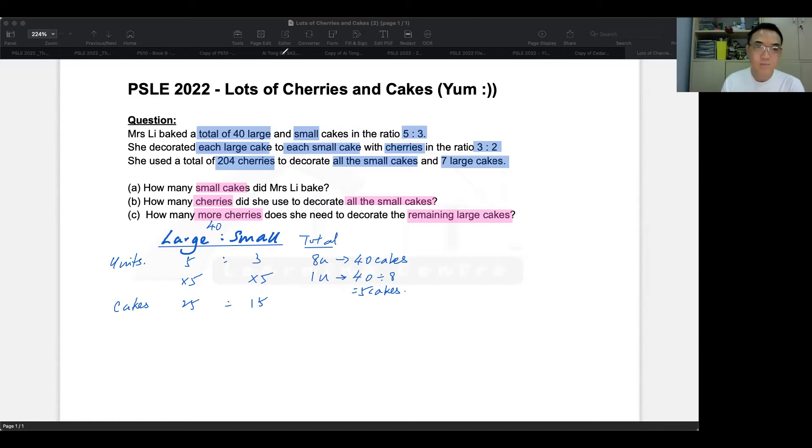Let's look back at the question. The first question was, how many small cakes did she bake? And so since this is the actual number of cakes, then this is the answer. She baked 15 small cakes.